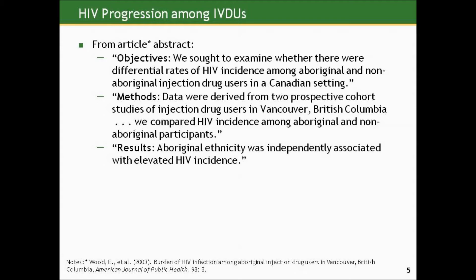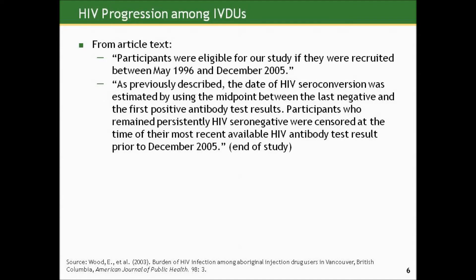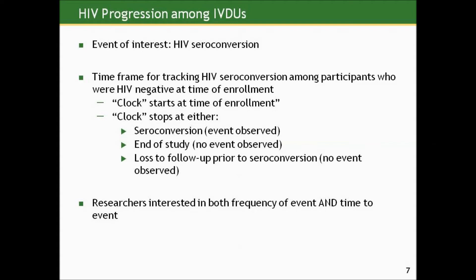We'll talk about the methods they used to come to that conclusion. Participants were eligible for this study if they were recruited between May 1996 and December 2005. The date of seroconversion was estimated using the midpoint between the last negative and first positive antibody test results. Participants who remained persistently HIV seronegative were censored at the time of their most recently available HIV antibody test prior to 2005. We'll define censoring in a minute.